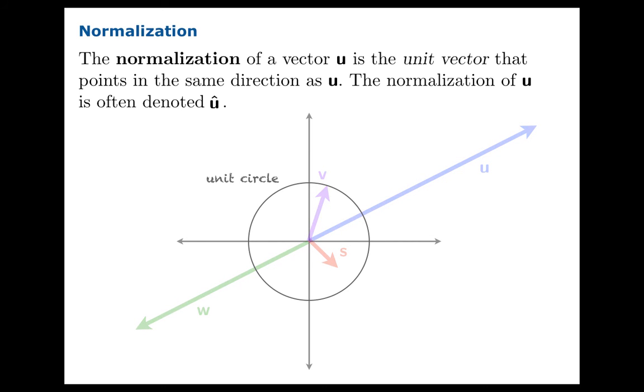In this case, when we normalize u and w, we have to scale them somehow down to size because they're too large. To find the normalization of s, we have to scale it up because it's too small. And if v was already a unit vector, then the normalization is going to be the same vector.